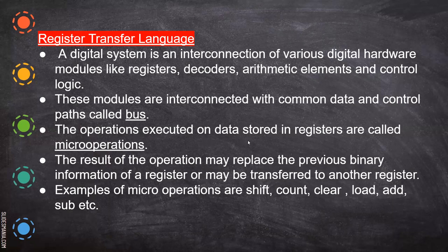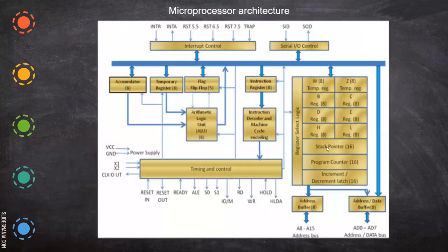The operations executed on data stored in registers are called micro operations. The result of the operation may replace the previous binary information of a register, or may be transferred to another register. For example, the data may transfer from H to L, or L to D, or D to B. When the data is transferred from L to H, the data in H will be overwritten — whatever was present in H is gone — whereas L still has that value because only H is overwritten, not L.